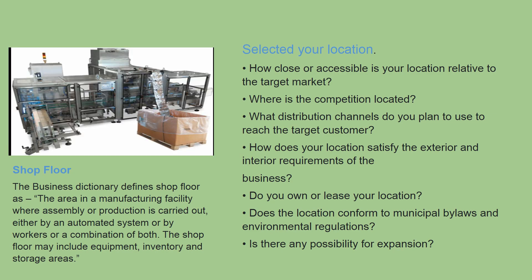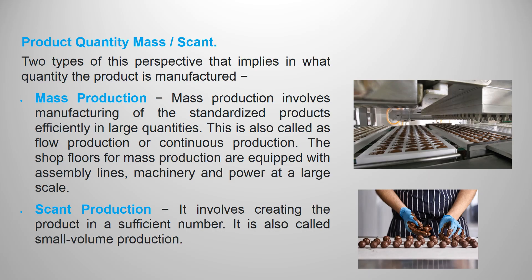There are two types of product quantity perspective. The first is mass production, which involves manufacturing standardized products efficiently in large quantities. This is also called flow production or continuous production. The shop floors for mass production are equipped with assembly lines, machinery, and power at a large scale.